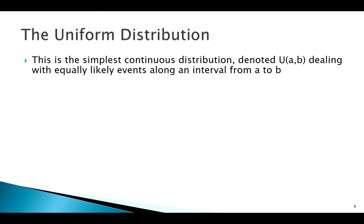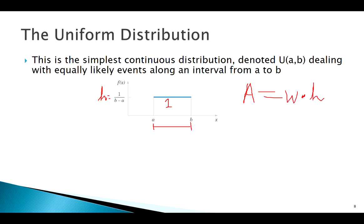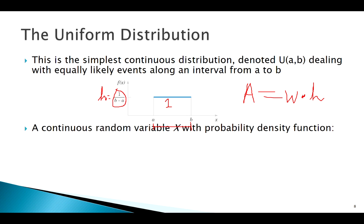The uniform distribution has equally likely outcomes defined on some interval from a to b. The shape is just a straight line — a rectangle — from a to b. Since the entire area must add up to one, and the area of a rectangle is width times height, we can find that the density function of a uniform random variable is always 1 over (b minus a).